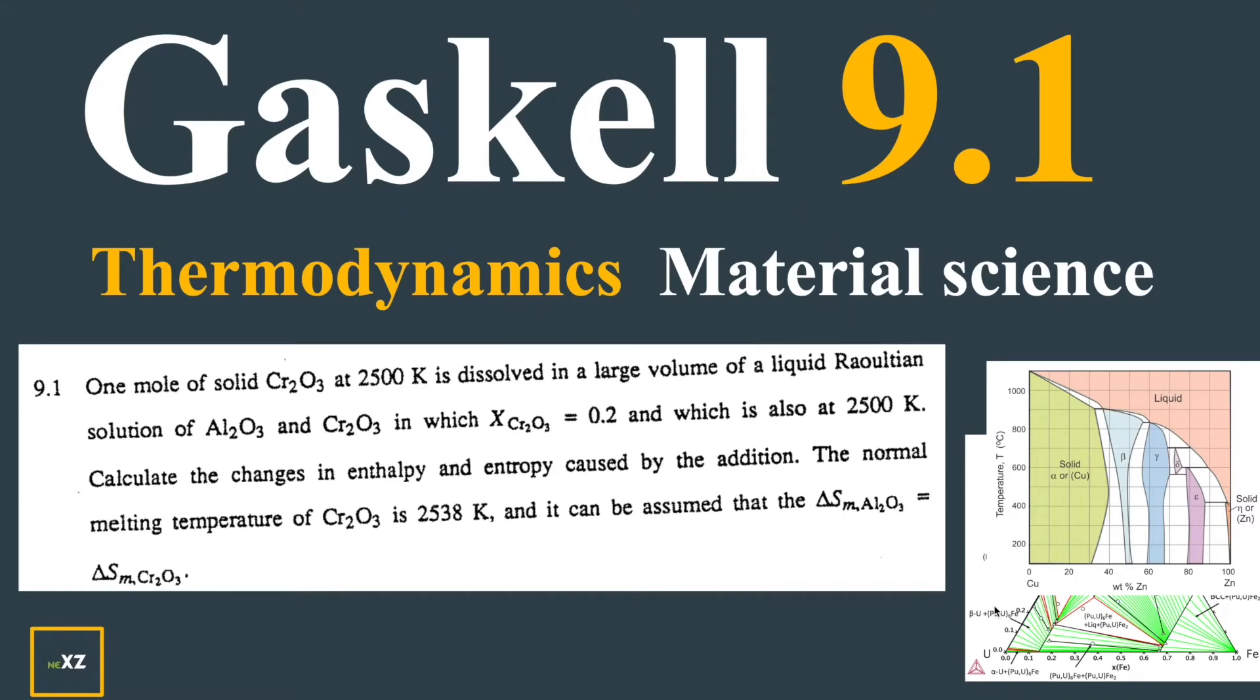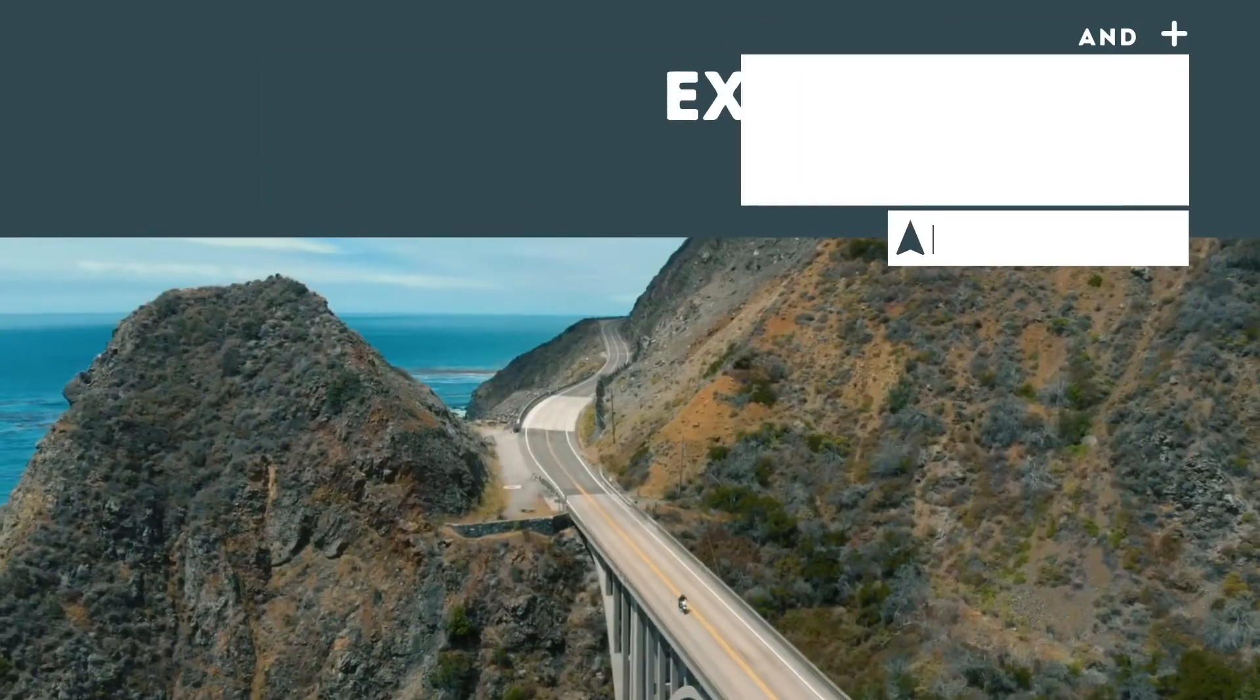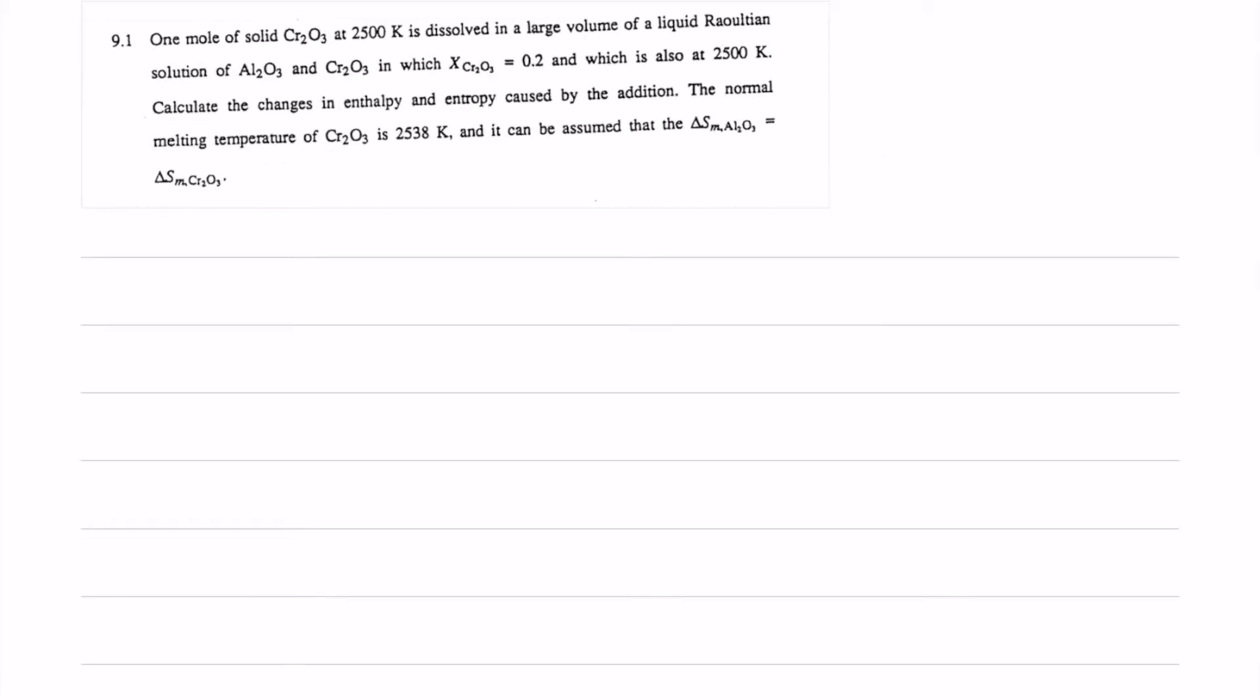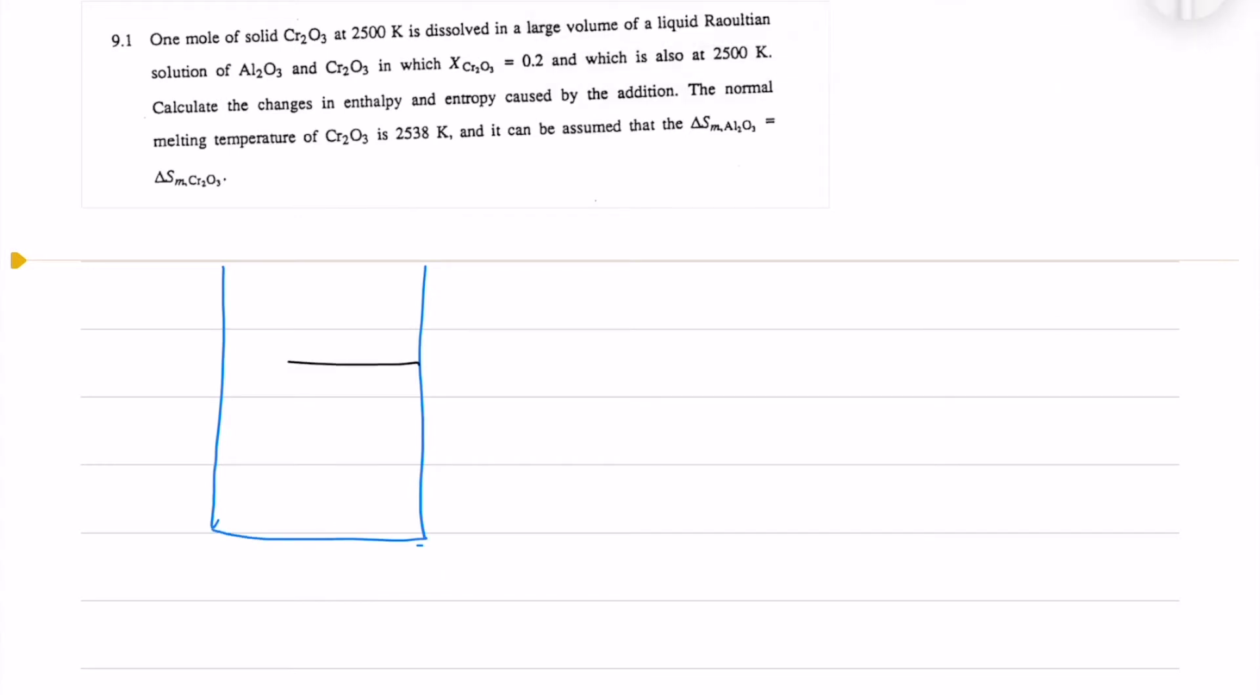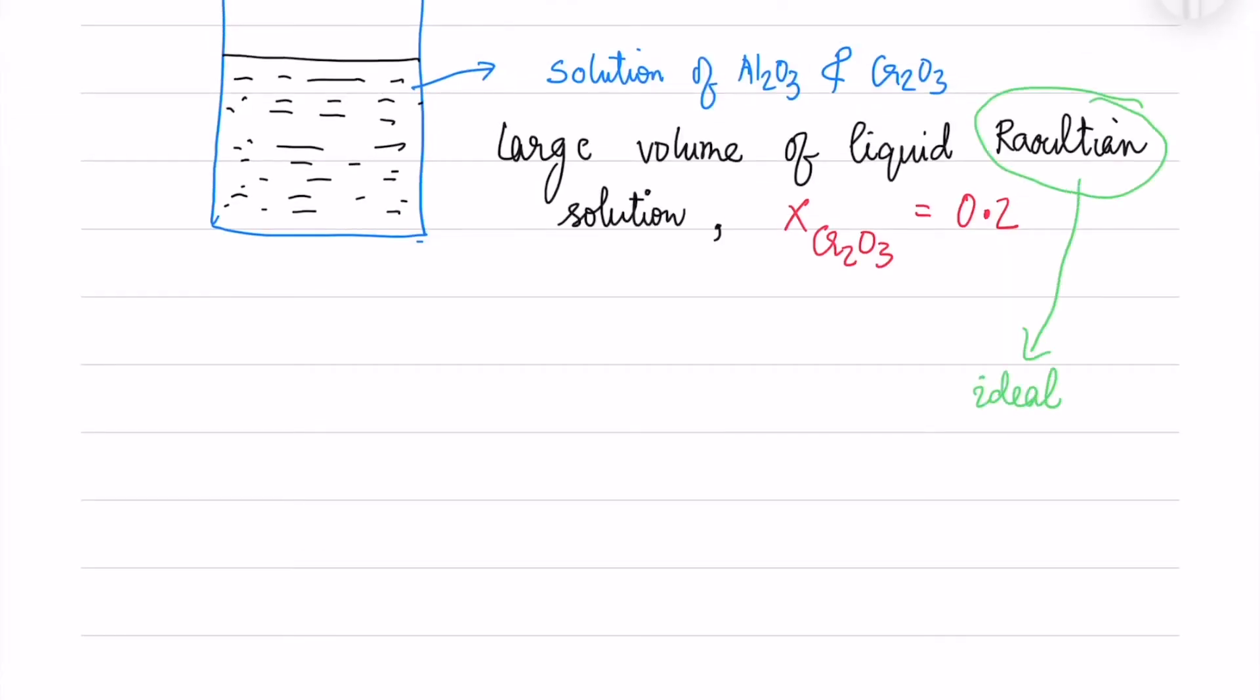Welcome to NexChange Student Channel Thermodynamic Web Series. Today, I'm going to discuss Gaskell 9.1 question. In this question, we are given a Raoultian solution of Al₂O₃ and chromium oxide (Cr₂O₃). We have a large volume of liquid Raoultian solution where the mole fraction of Cr₂O₃ is 0.2, and Raoultian means it's an ideal solution.